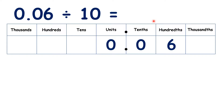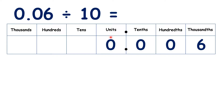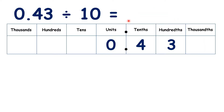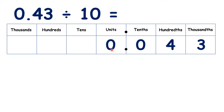So now, what is 0.06 divided by 10? We move the digits one place to the right, and again we need a 0 in our units column, so we have 0.006. What is 0.43 divided by 10? We move the digits across, write a 0 in the units, and we have 0.043.